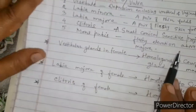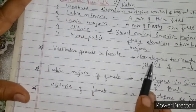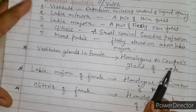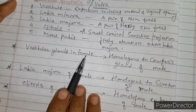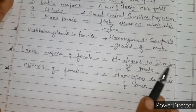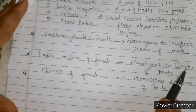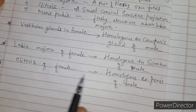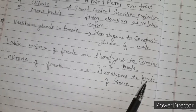The vestibular glands in the female are homologous to the Cowper's glands in the male. The labia majora of the female is homologous to the scrotum — the skin pouch in which the testes are located — in the male. The clitoris of the female is homologous to the penis of the male, through which the urethra runs.